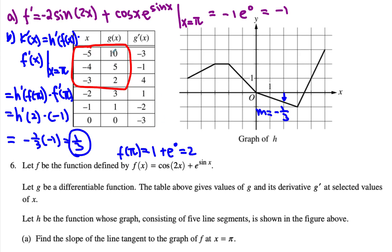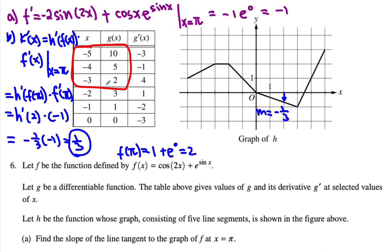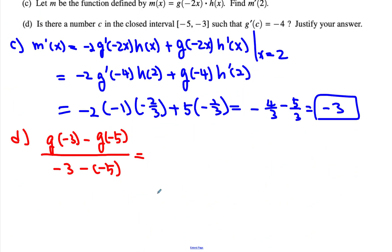So g of negative three minus g of negative five over negative three minus negative five. Let's look at that. Negative three, here's two minus ten over two, which is equal to negative four, which matches right over here.